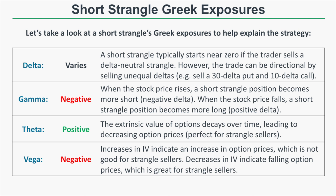A short strangle position has negative gamma, meaning that as the stock price rises the position becomes more short, and as the stock price falls it becomes more long. If the stock price keeps increasing toward your short call, you'll accumulate negative deltas and lose more and more money. You want the stock price to remain between your short strikes and not make a run in either direction, because that will make your position increasingly directional and your losses will grow.